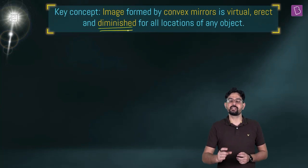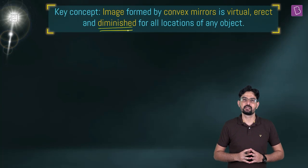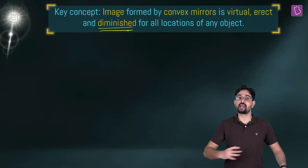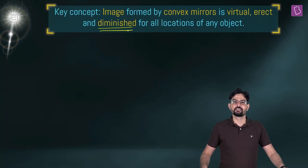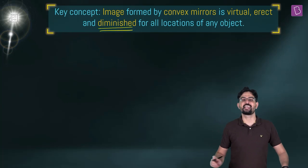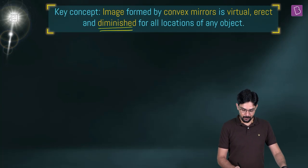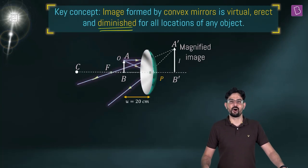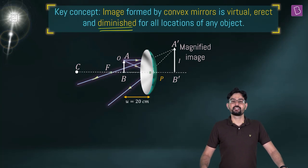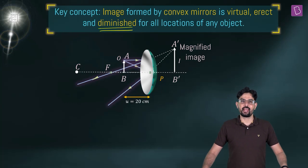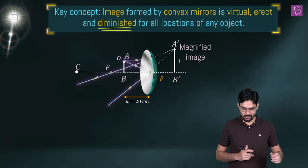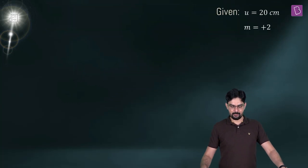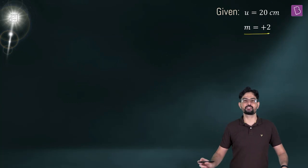The image formed by any convex mirror is going to be smaller in size compared to the object. But in this problem the image is magnified — in fact, it is twice as large as the size of the object. So the mirror is a concave mirror, with the object placed between pole and focus, like a shaving mirror. The image is virtual and erect, and twice in size, so the magnification is plus two.